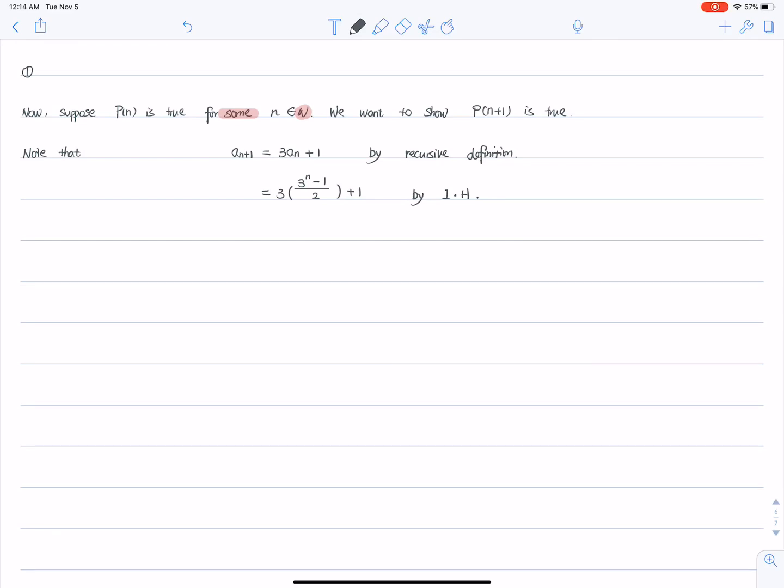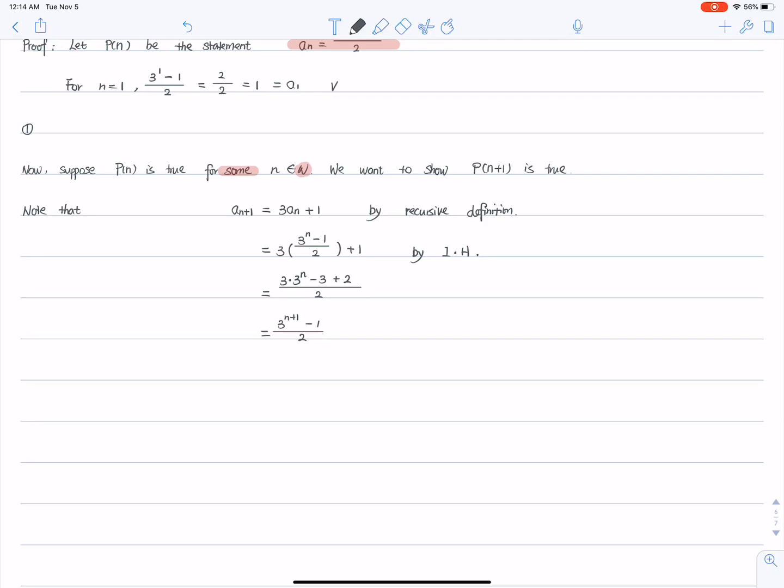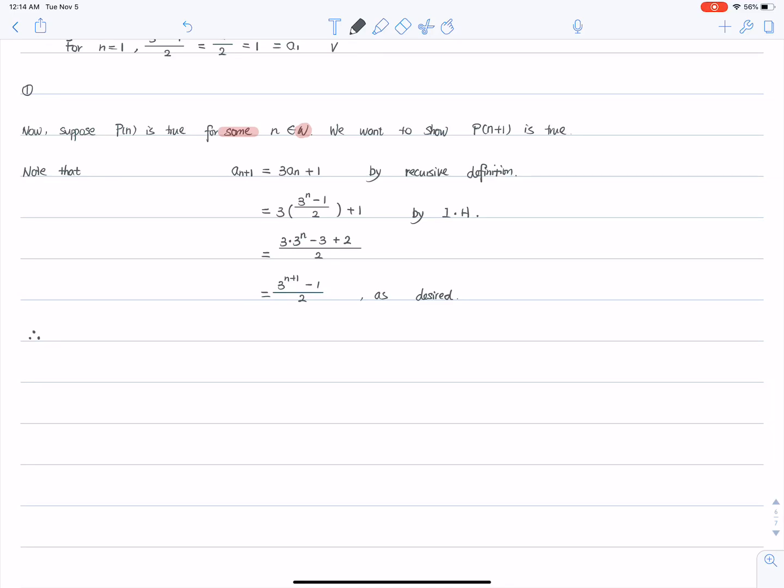Now you can just manipulate. This will give you 3 times 3 to the power of n minus 3 plus 2. And this is 3 to the power of n plus 1 minus 1 over 2. Okay? Which is exactly what we need as desired. Therefore, so we showed that p of n is true implies p of n plus 1 is true. Therefore, by principle of mathematical induction, p(n) is true for all n in natural number. That's it.